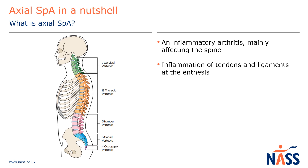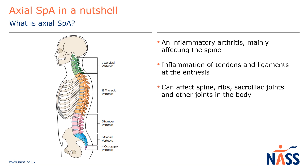So you can get inflammation anywhere where muscles and ligaments attach to bones. The main area this affects is along the whole spine, including the neck, the ribs, where they attach to the back and the front.